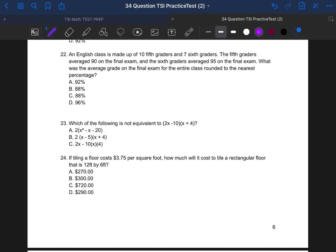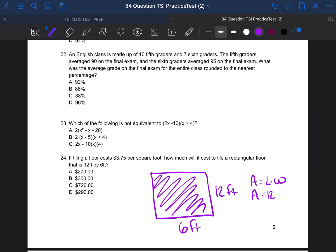So question number 24 says, if tiling a floor costs $3.75 per square foot, how much would it cost to tile a rectangular floor that is 12 feet by 6 feet? All right. So I like to draw a picture. It's 12 feet by 6 feet. It's a rectangle. So the area of the rectangle area is equal to length times width. So if the length is 12 and the width is 6, what would be the area? All you have to do is 12 times 6 and the area would be 72 feet squared.